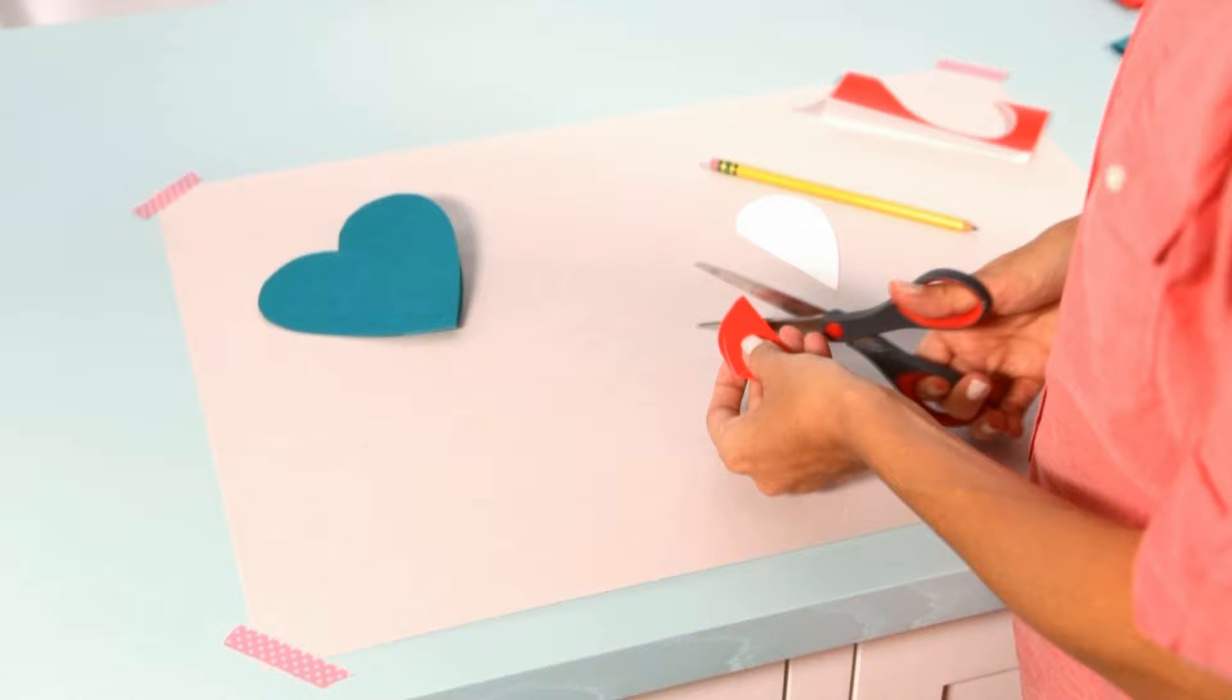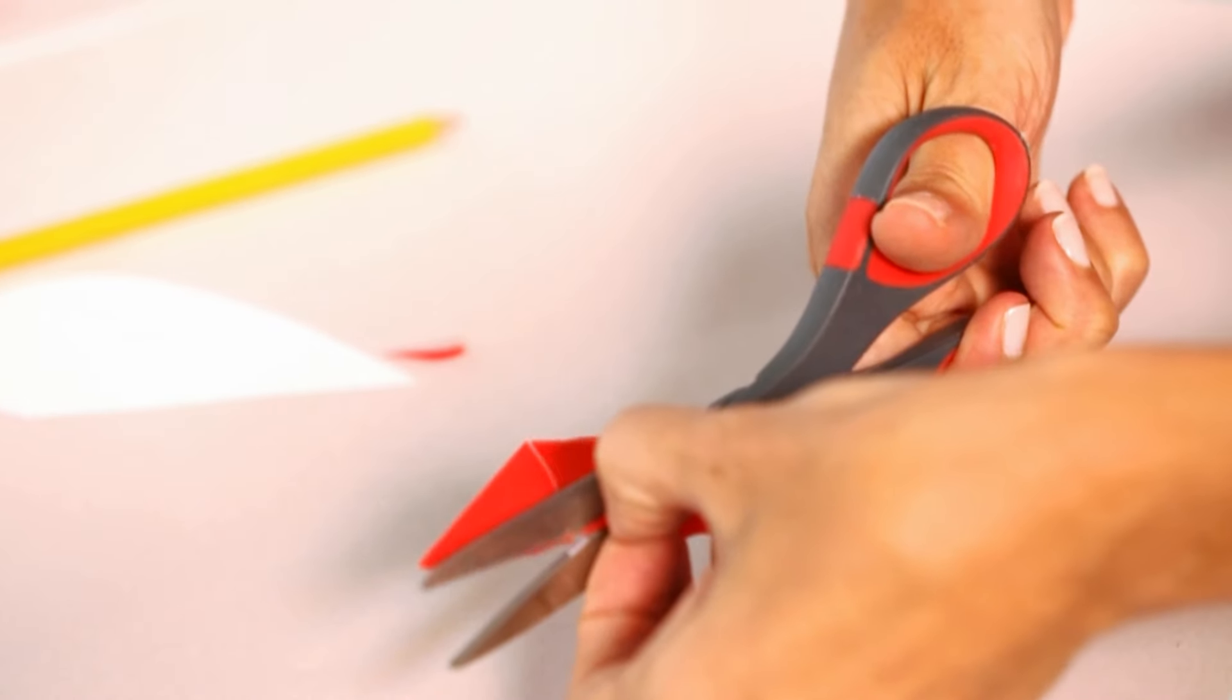Use your scissors to cut shapes along the two folded edges like you would for a paper snowflake. Unfold it to reveal your beautiful pattern.